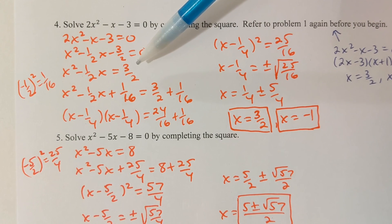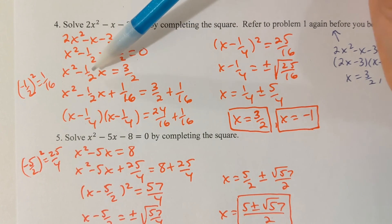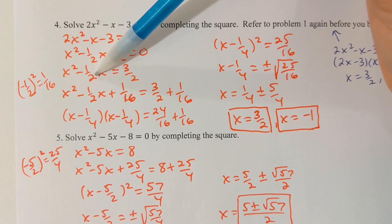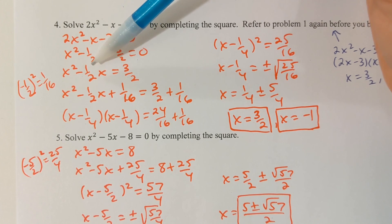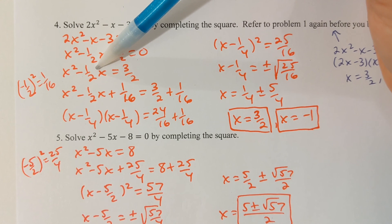How we actually complete the square is we want to take half of the number in front of x, and we want to add that new number to both sides. We want half of the number in front of x, and we're going to add that new number to both sides.